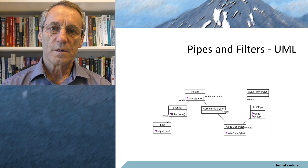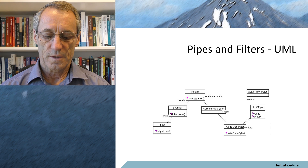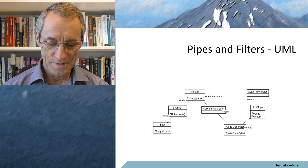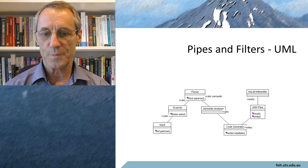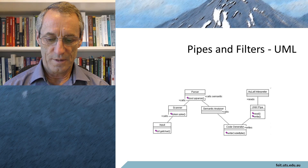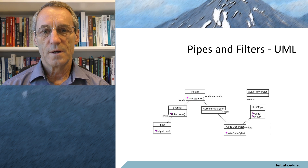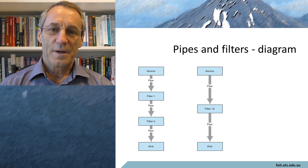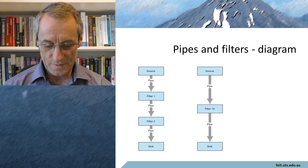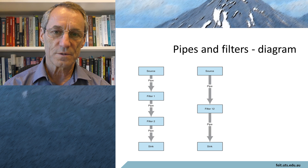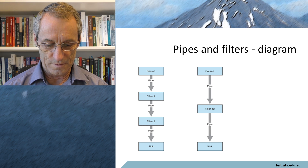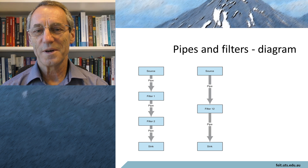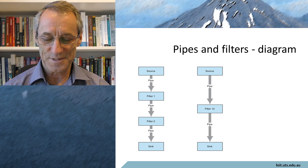Now, the design of pipes and filters — you can see it there in UML — where there's simply a collection of filters. You get the input, it goes through some sort of a scanner, then through a parser, then through a semantic analyzer, a code generator, a Unix pipe, and then through the interpreter. The lines between them imply the pipes that connect all these filters together. In a more box-and-arrows type diagram instead of UML, you can see it there where you have a source going through filter one, filter two, before into the final sink, or just going through just the one filter. They're pretty unintelligent-looking pictures, but that's about as well as we can diagram them.